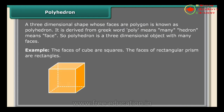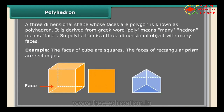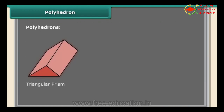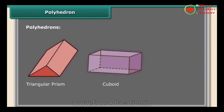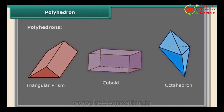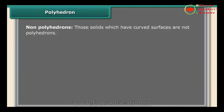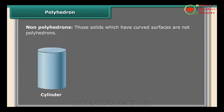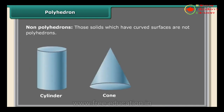The faces of a cube are squares, and the faces of a rectangular prism are rectangles. Examples of polyhedrons include triangular prism, cuboid, and octahedron. Non-polyhedrons are solids which have curved surfaces — for example, cylinder, cone, and sphere are not polyhedrons.